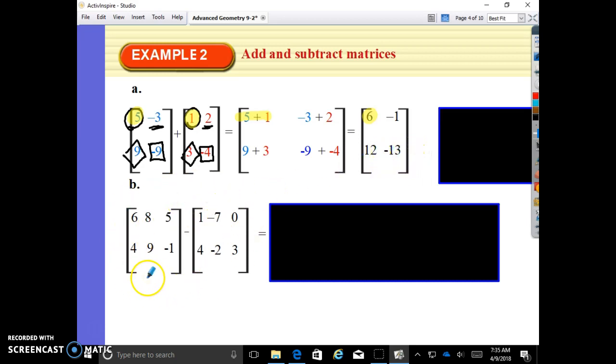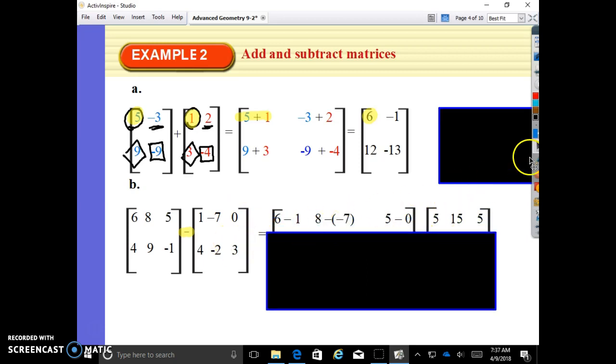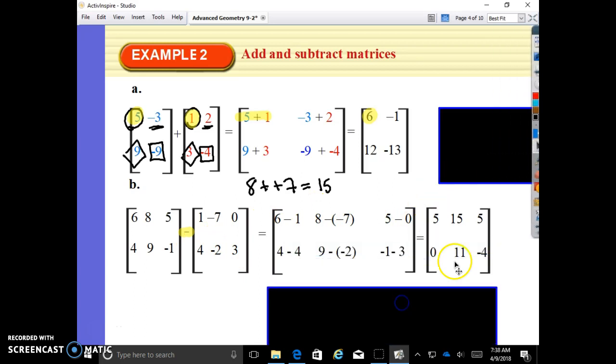I want you guys to take a minute to try B. This one is subtraction. Don't forget to use your subtraction symbol. I'm going to pause the video. You should pause as well and attempt B. So 6 minus 1, top left corner, 5. Top middle, 8 minus negative 7. Sorry, 8 minus negative 7, bam bam, 8 plus 7, right? Keep, change, opposite. 8 plus 7 is 15. On the bottom row, 4 minus 4, 0. 9 minus negative 2, bam bam, 11. Negative 1 minus 3, negative 4. Here's your final answer.